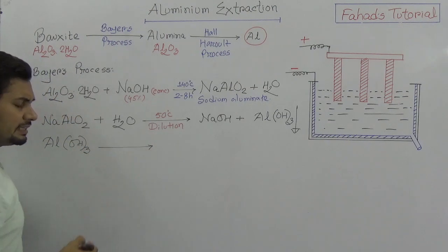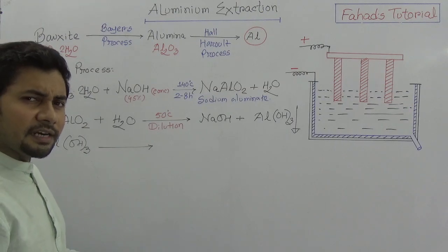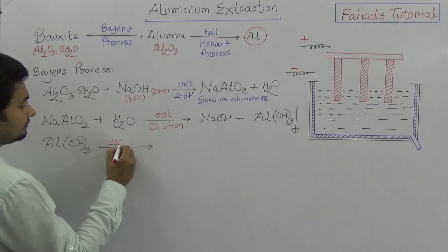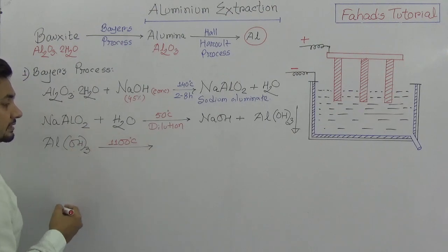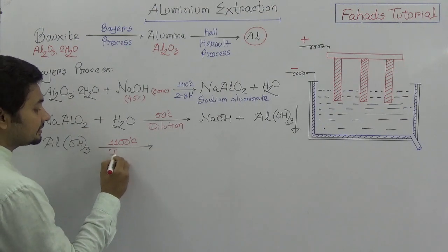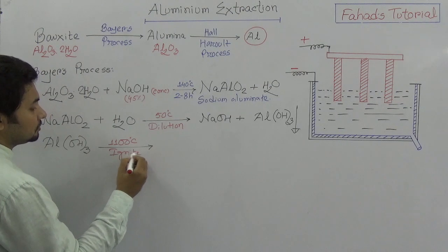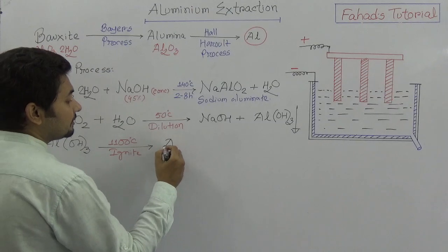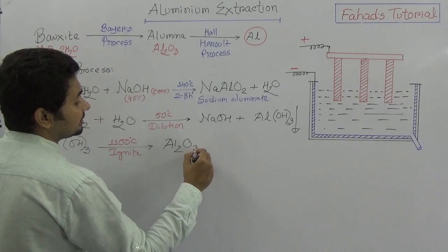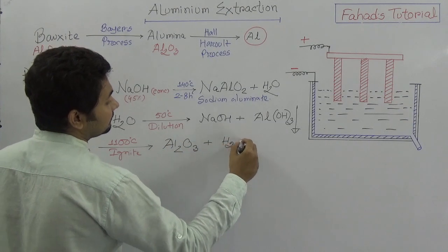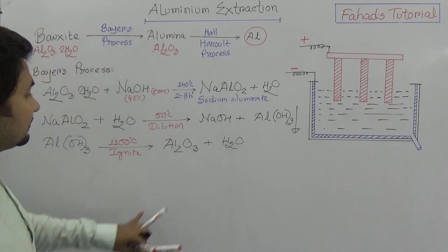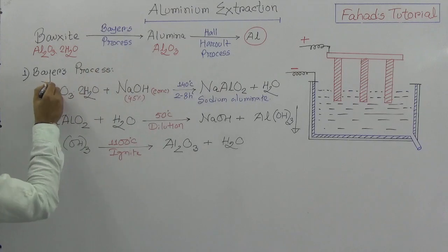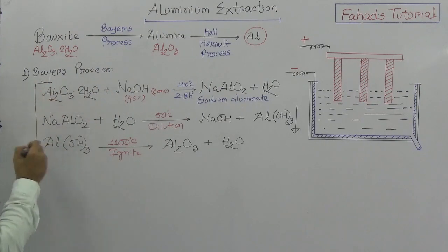In the third step, this aluminium hydroxide is ignited at nearly 1100 to 1200 degrees Celsius — a very high temperature. At this temperature, aluminium oxide (alumina) and water are produced. So after these three consecutive reactions we have obtained alumina.